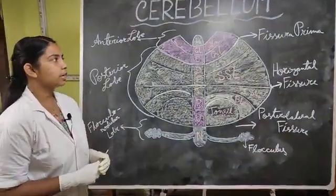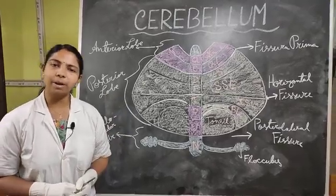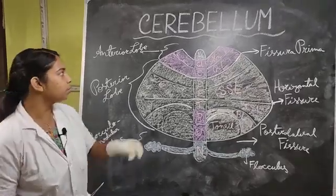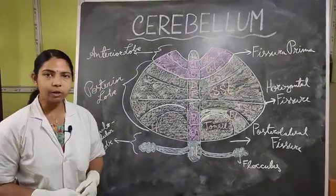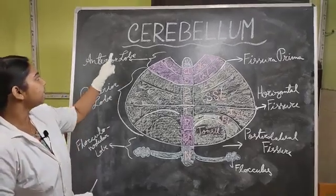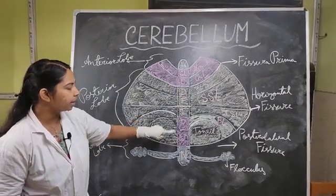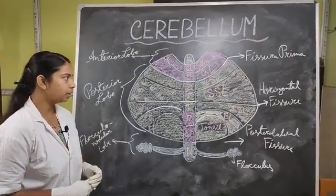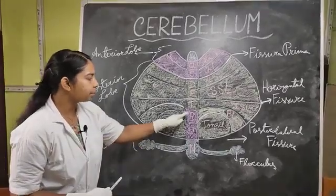Developmentally, the cerebellum can be morphologically classified into archicerebellum, paleocerebellum, and neocerebellum. The archicerebellum is the oldest and includes the lingula, nodule, and flocculus. The paleocerebellum developed later and includes the anterior lobe except the lingula, and in the inferior vermis the pyramid and uvula. The neocerebellum is the newest and includes the largest lobe — the posterior lobe — except the pyramid and uvula.